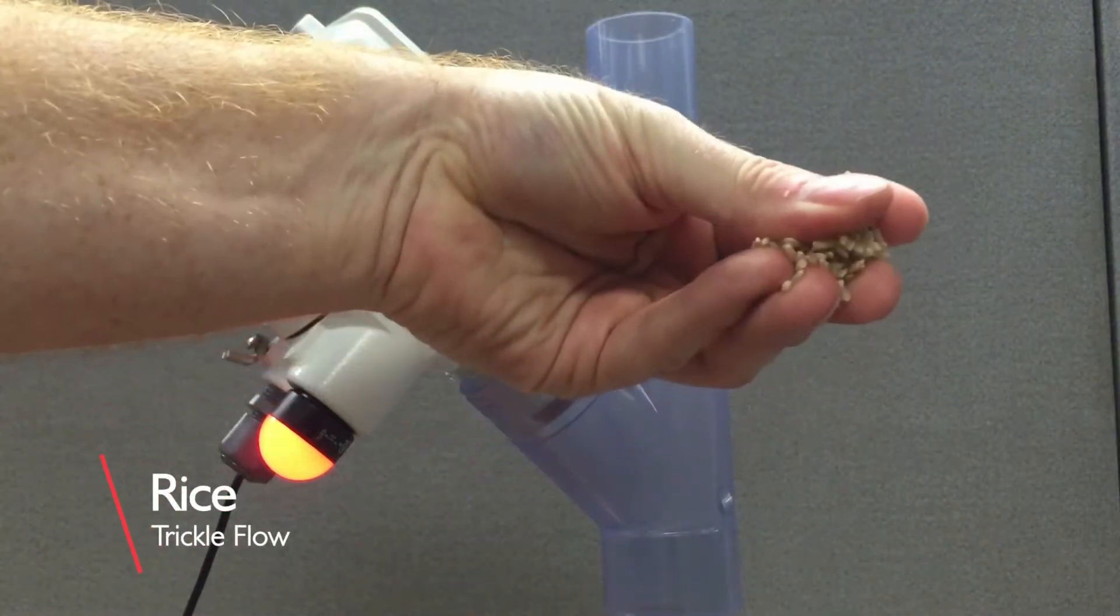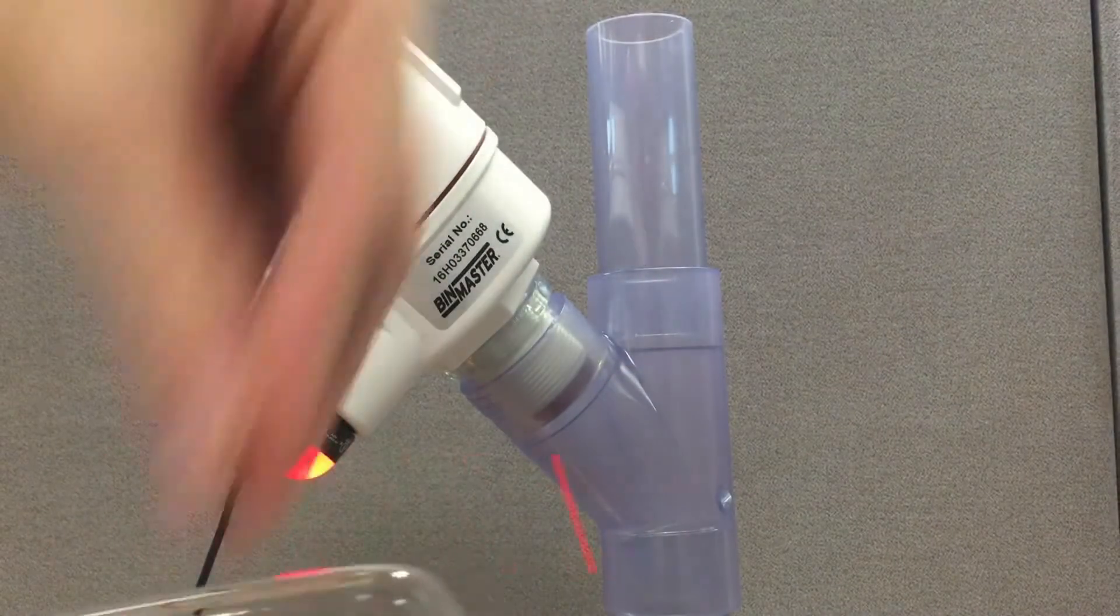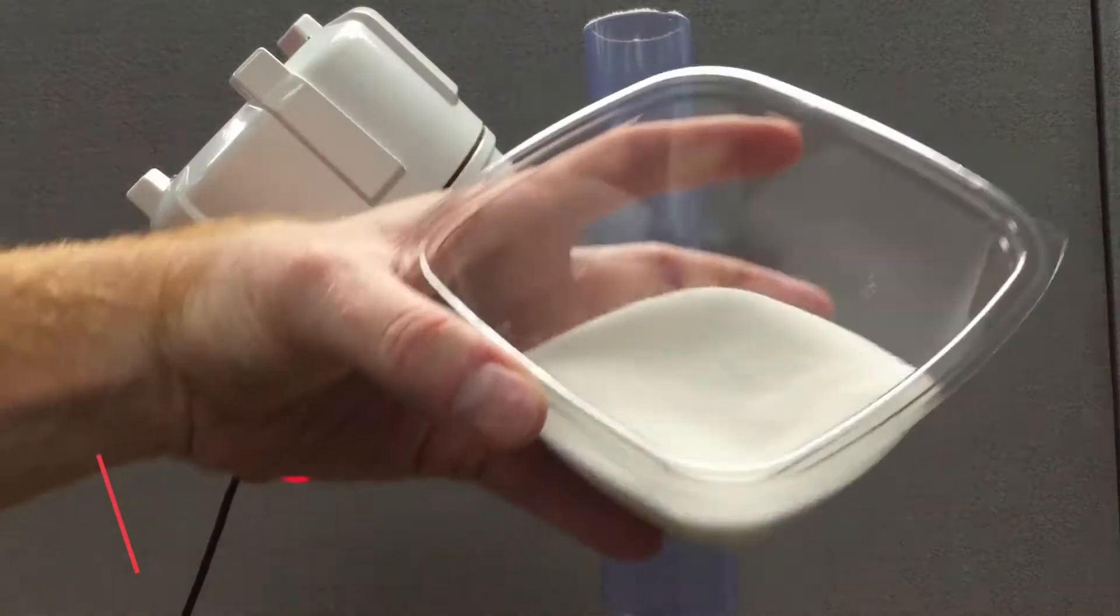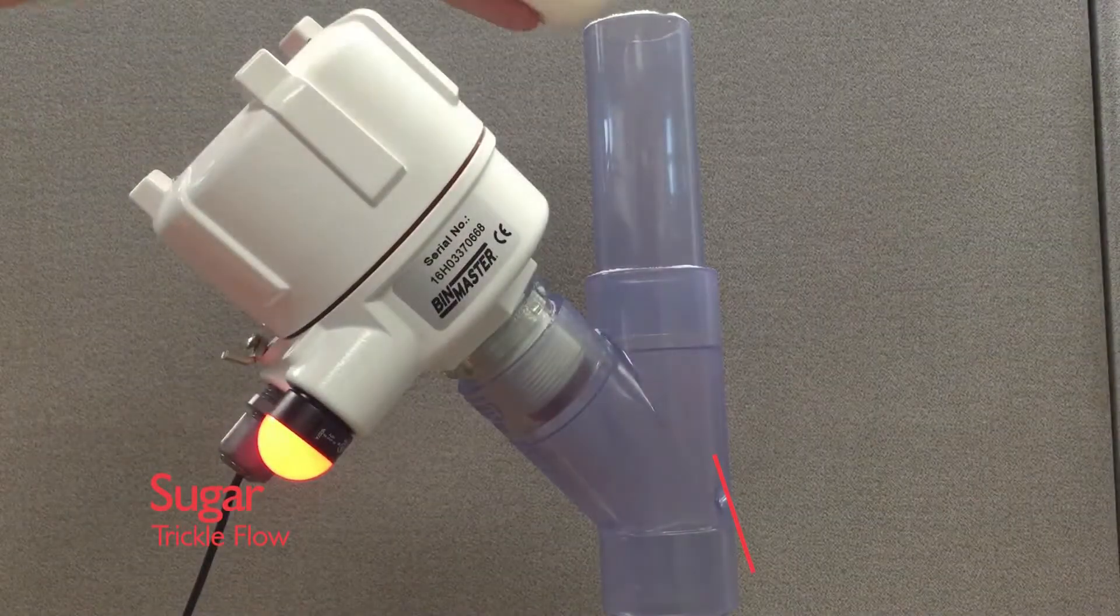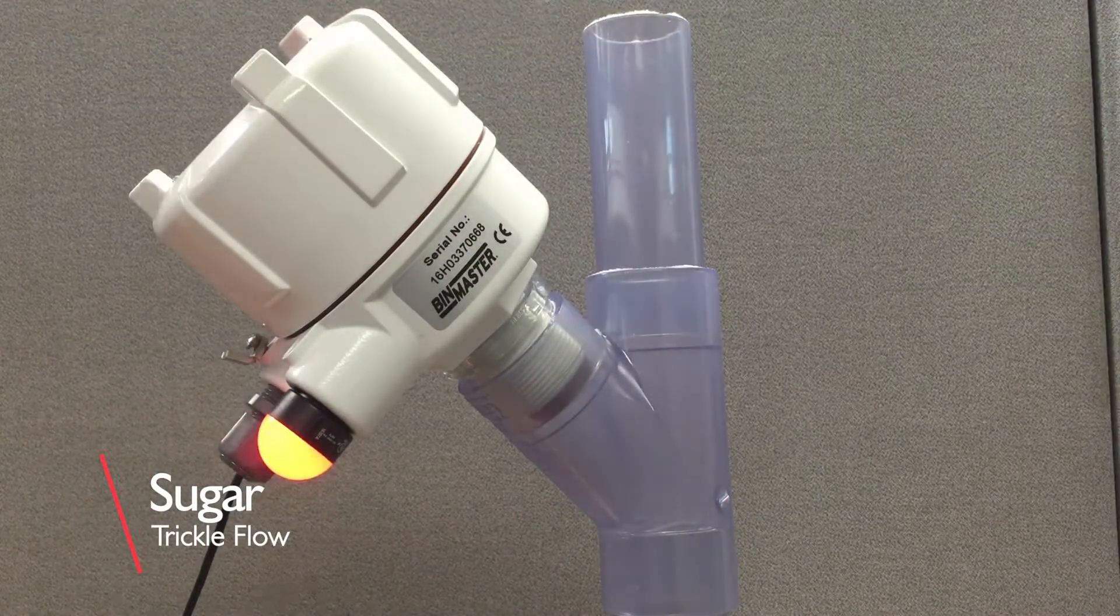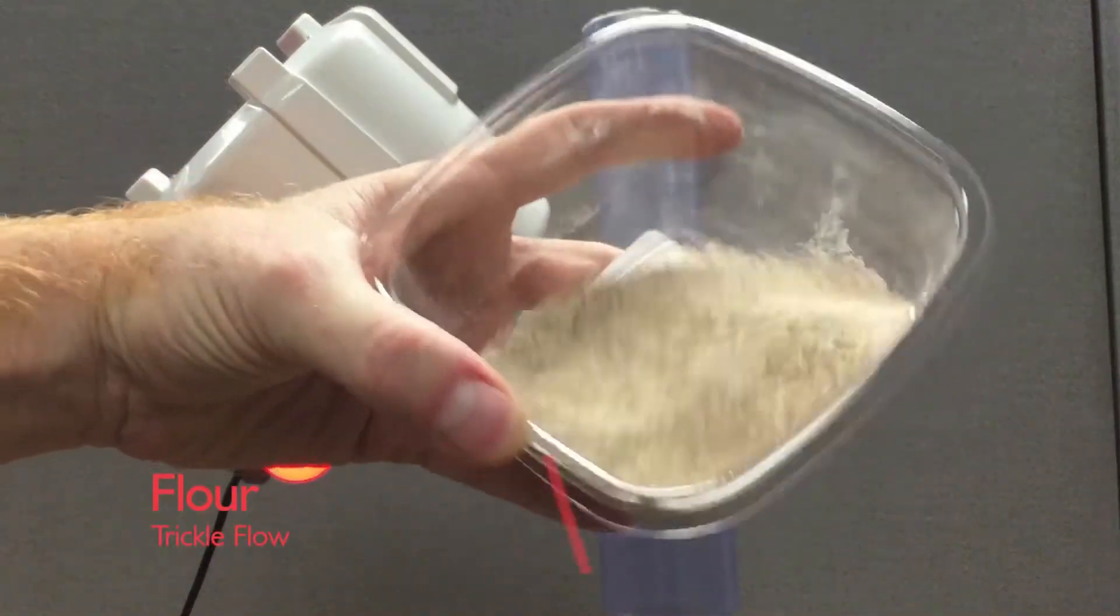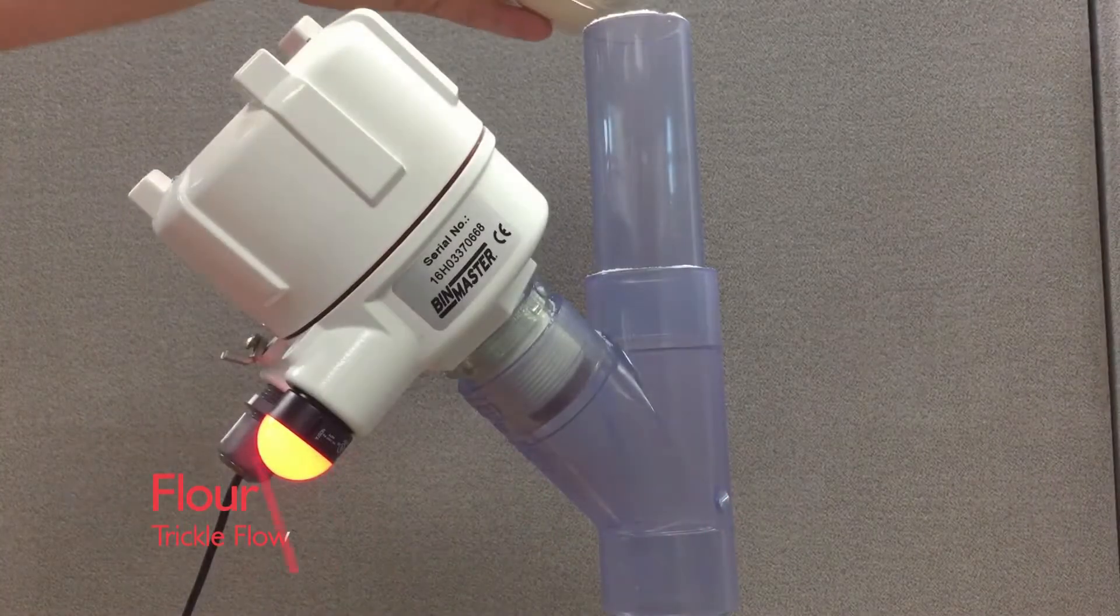The Flow Detect 2000 also has a way to adjust the sensitivity. If you need more than trickle flow to trigger the unit, you can decrease the sensitivity and the unit will require a lot more flow to activate.